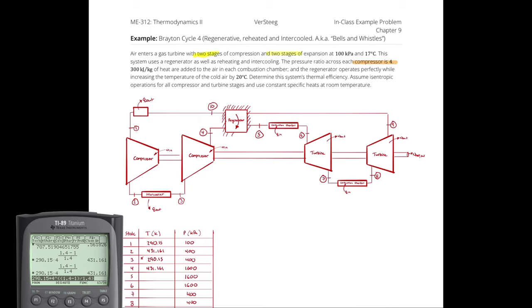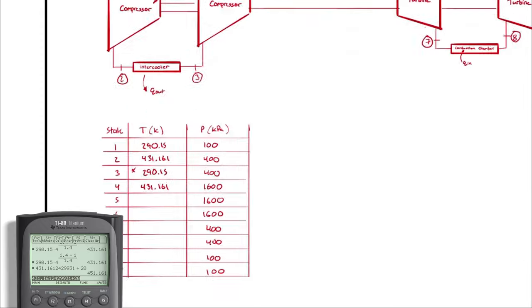Going from state 4 to state 5 through the regenerator: the problem tells us the regenerator increases the temperature of the cold air by 20°C. So T5 = T4 + 20 = 431.161 + 20 = 451.161 K.